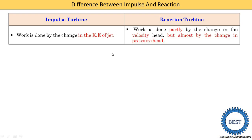The next point is about work done and which type of energy it is based on. In an impulse turbine, the supplied water has only kinetic energy, so the work done is only dependent on the kinetic energy of the jet. In a reaction turbine, the work is done partially by the change in velocity head but mostly by the change in pressure head — it depends on both velocity and pressure, but the majority of work done is produced by the change in pressure head.